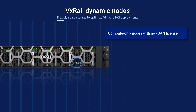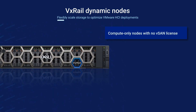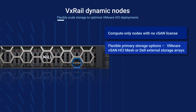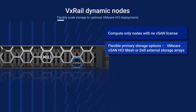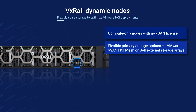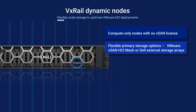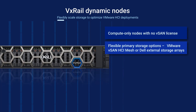Mixing VxRail Dynamic Nodes and vSAN nodes is not supported, though data stores can be shared. VxRail Dynamic Nodes can get their primary storage either as shared from vSAN HCI Mesh, or from Dell PowerStore T, PowerMax, Dell Unity XT, and on VxRail 7.0.300 or higher, from PowerFlex storage arrays.